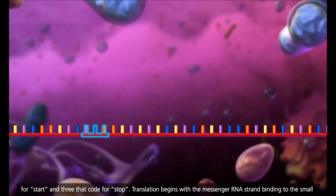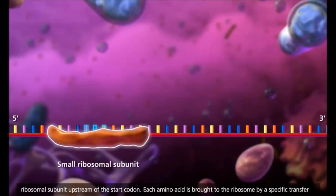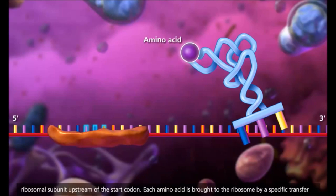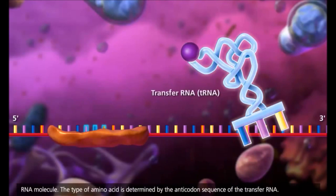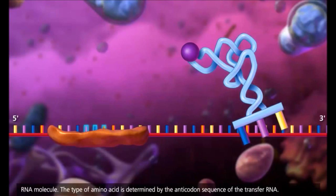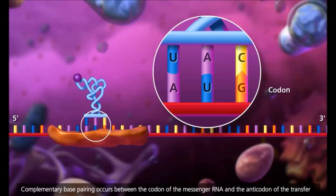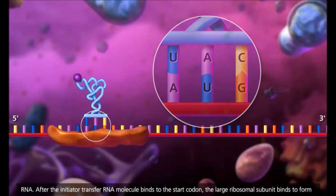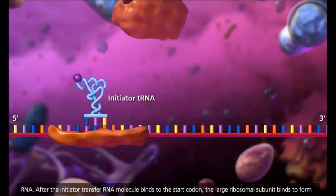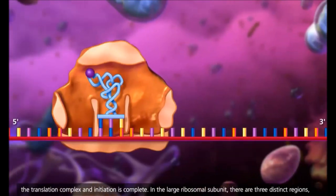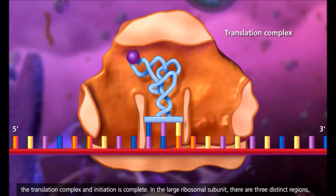Translation begins with the messenger RNA strand binding to the small ribosomal subunit upstream of the start codon. Each amino acid is brought to the ribosome by a specific transfer RNA molecule. The type of amino acid is determined by the anticodon sequence of the transfer RNA. Complementary base pairing occurs between the codon of the messenger RNA and the anticodon of the transfer RNA. After the initiator transfer RNA molecule binds to the start codon, the large ribosomal subunit binds to form the translation complex and initiation is complete.